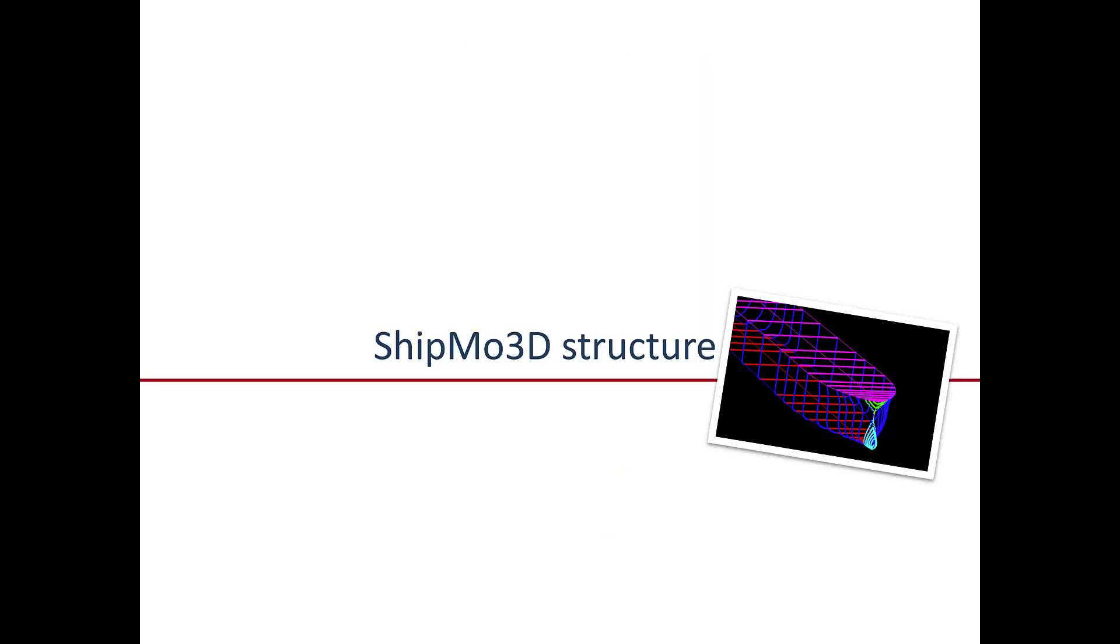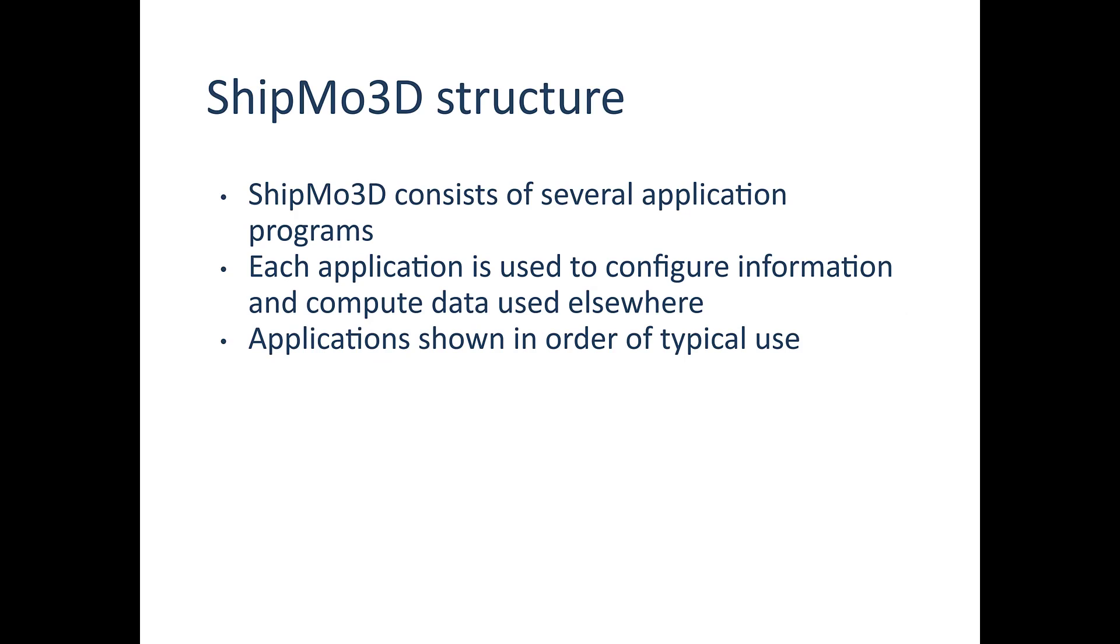So let's jump into the structure of ShipMo3D now. Remember that ShipMo3D consists of quite a few application programs, and each application is used to configure information and compute data used elsewhere. Of course there's going to be a few applications like the seakeeping and maneuvering applications that use the aggregate ship model information and produce the seakeeping and maneuvering motion outputs.